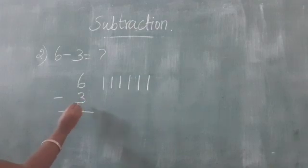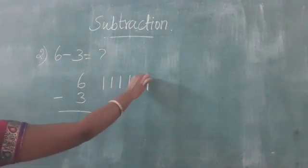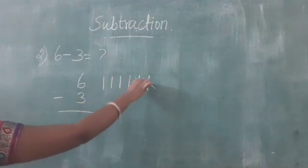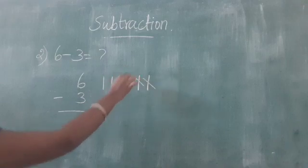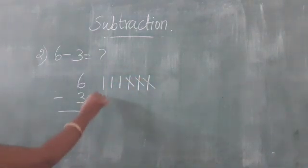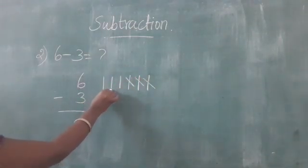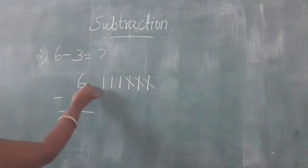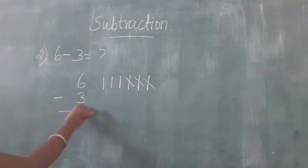So we cut 3 lines: 1, 2, 3. So remaining: 1, 2, 3. So 6 minus 3 equals 3.